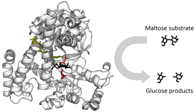An enzyme's activity decreases markedly outside its optimal temperature and pH. Some enzymes are used commercially, for example in the synthesis of antibiotics. Some household products use enzymes to speed up chemical reactions. Enzymes in biological washing powders break down protein, starch or fat stains on clothes, and enzymes in meat tenderizer break down proteins into smaller molecules, making the meat easier to chew.